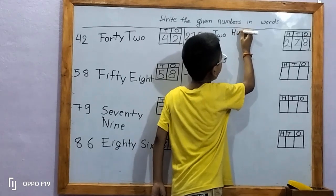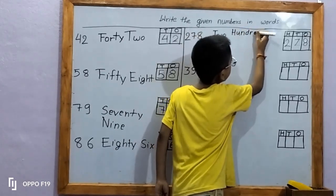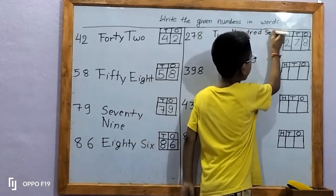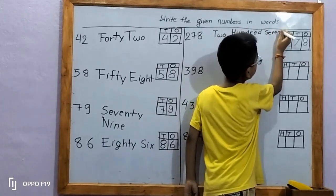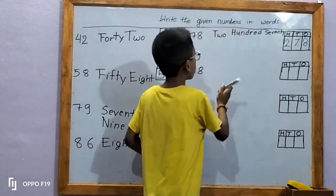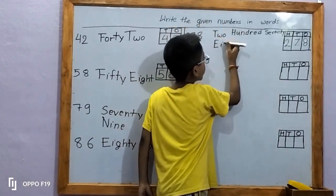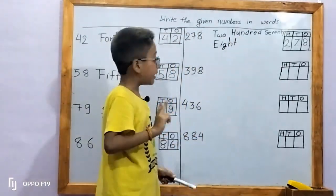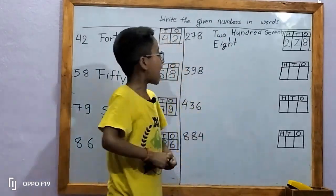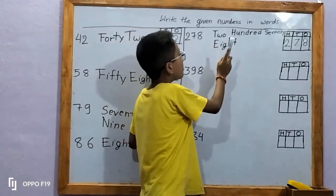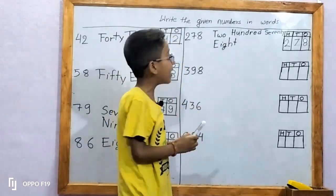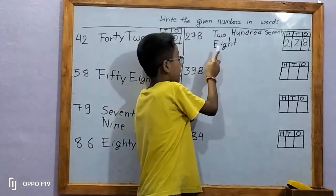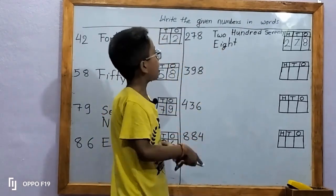H-U-N-D-R-E-D, hundred. S-E-V-E-N-T-Y, 70. E-I-G-H-T, eight. Let's spell 278 guys: T-W-O, 2, H-U-N-D-R-E-D, 100, S-E-V-E-N-T-Y, 70, E-I-G-H-T, 278.